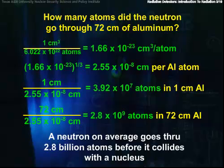A neutron, on average, goes through 2.8 billion atoms before it collides with a nucleus. Now do you believe that atoms are mostly nothing?